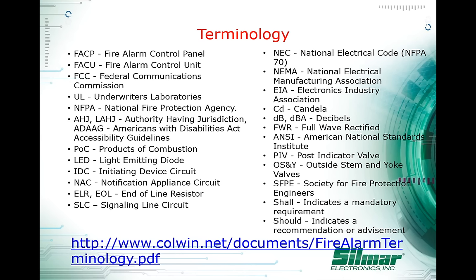The types of alarms you can see on an annunciator are: an alarm signal, which indicates an emergency requiring immediate attention; a supervisory signal, indicating the need for action due to an off-normal condition; and a trouble signal, which indicates a fault in a circuit or component.